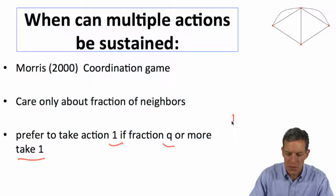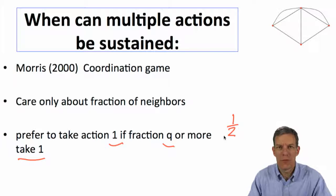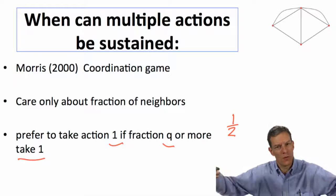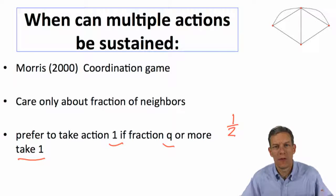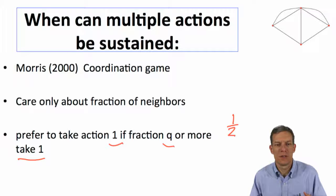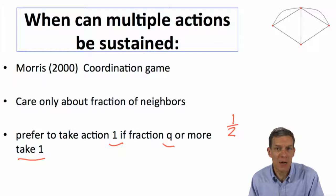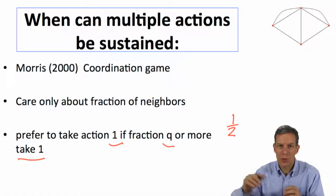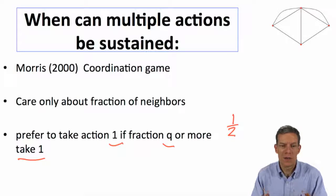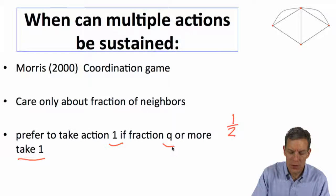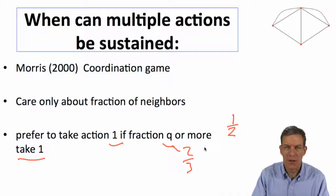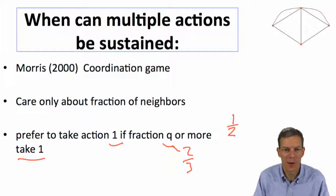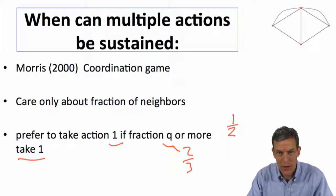Suppose Q is a half — you just want to match the majority of your friends. If the majority take action one, you want to do that; if the majority take action zero, you prefer action zero. This is a game of strategic complements where everybody's threshold is just the same fraction Q of their degree. Q could be a half or two-thirds — maybe you need two-thirds of your neighbors to adopt a new technology before you're willing to do so. It's a very simple coordination game.